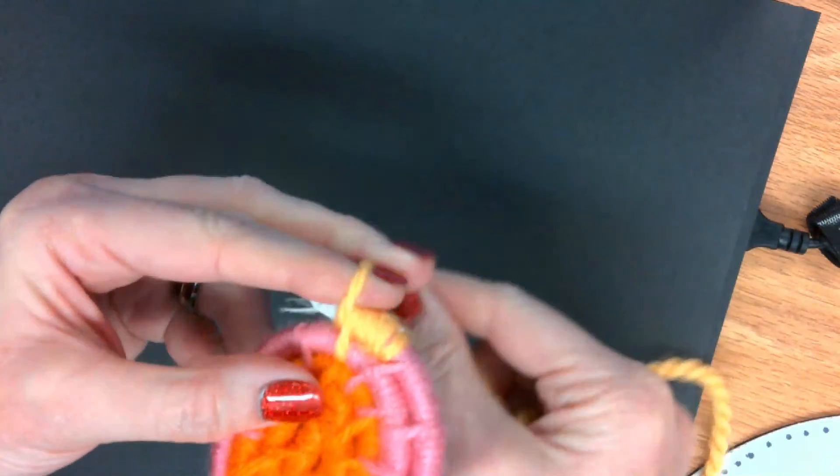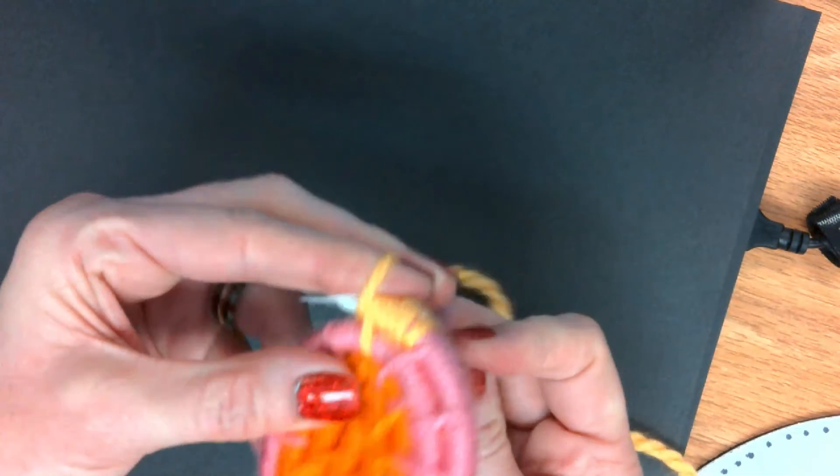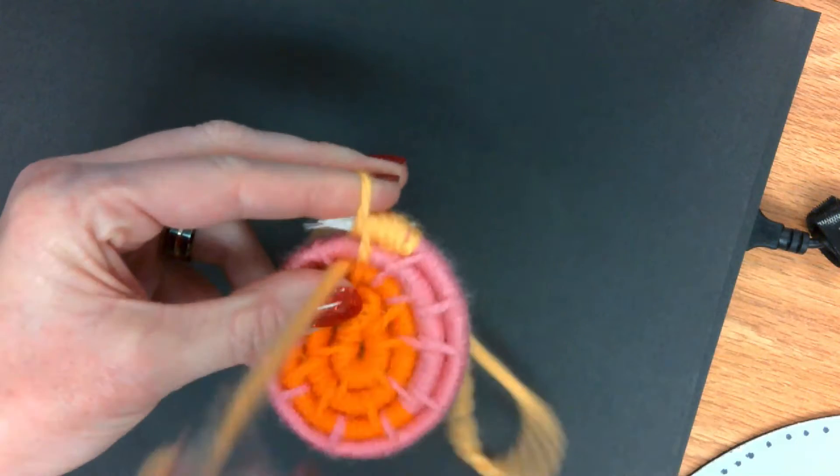So you're going to wrap around your finger and the core material. Go ahead and do your stitch through the layer before it, pull up.